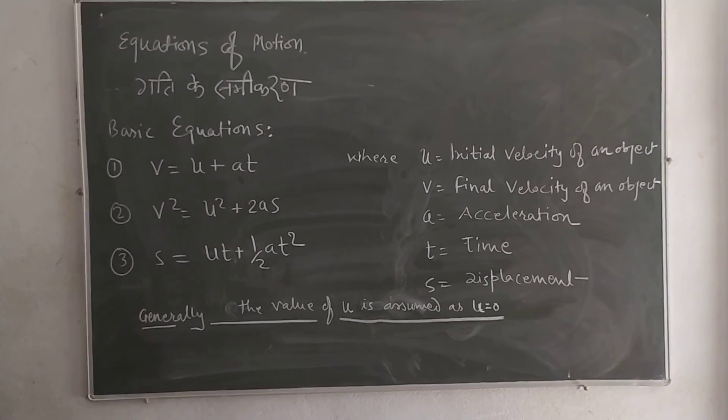Initial velocity of an object is always zero when it is at rest.